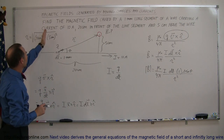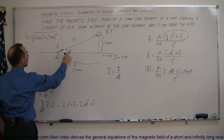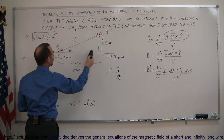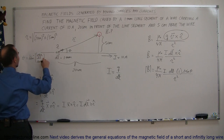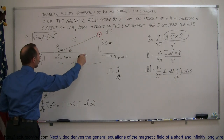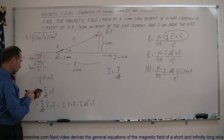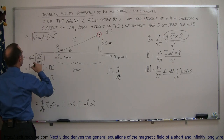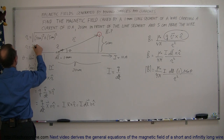We still need to find theta. Theta can be found by taking the arc tangent, since we're given the opposite side and the adjacent side. Theta equals arc tangent of opposite over adjacent, which is arc tangent of 5 centimeters divided by 20 centimeters. That gives us 14 degrees. For r: square root of 20² plus 5² equals 20.6. So r equals 20.6 centimeters and theta equals 14 degrees.